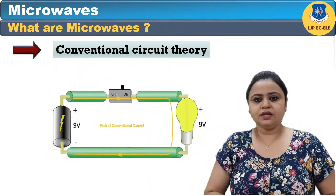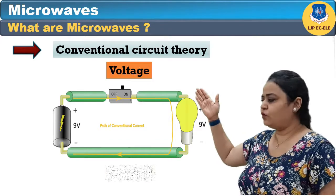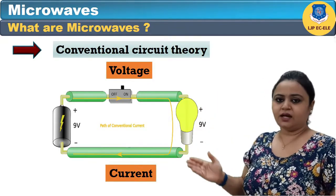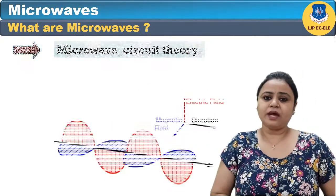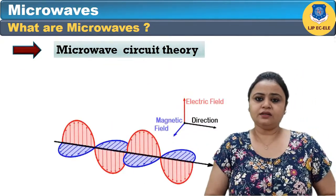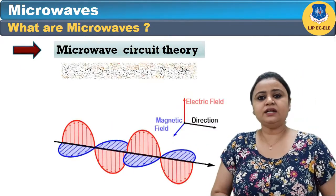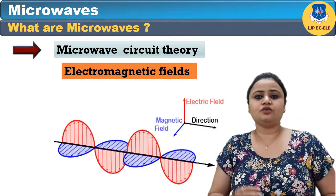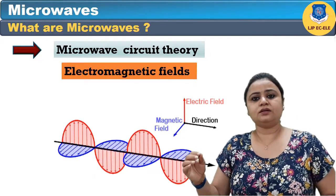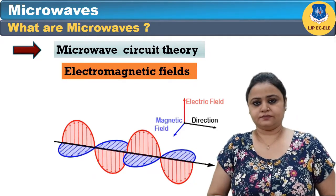Conventional circuit theory is based upon voltage and current, but in microwave circuit theory we will deal with electromagnetic fields.